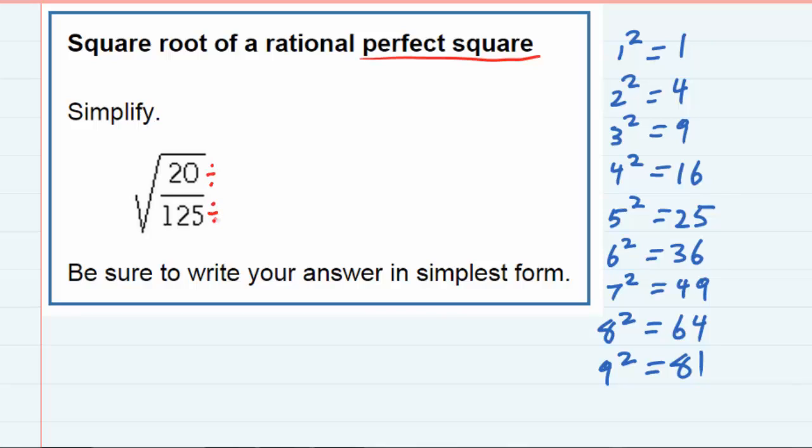If there's something that divides evenly into both of them, and in this case there is, both 20 and 125 are both divisible by 5.